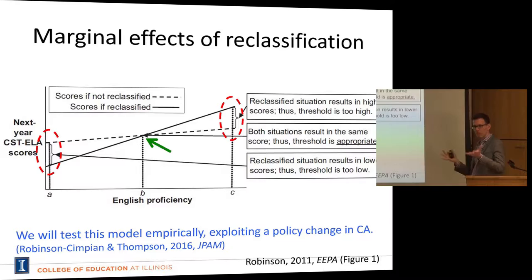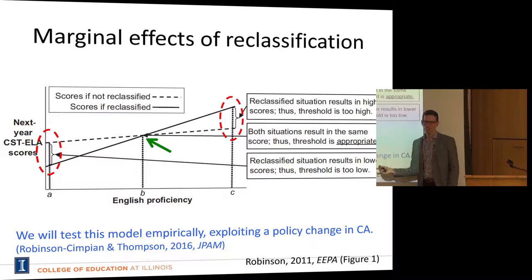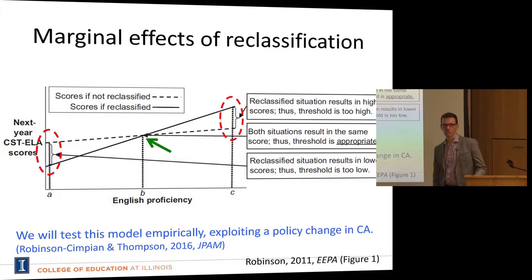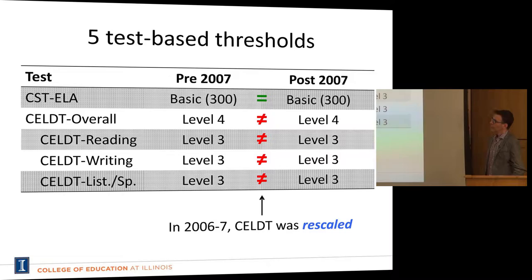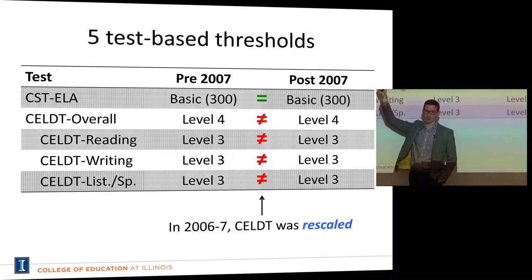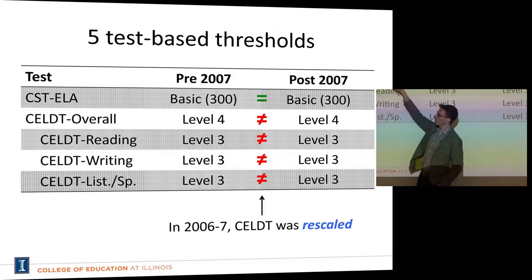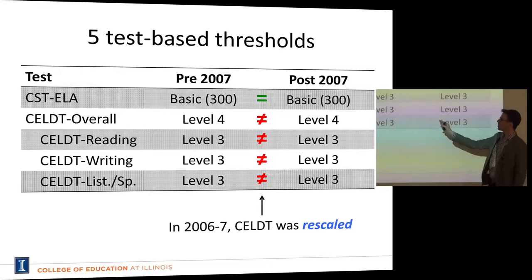Karen and I had an opportunity to test this with data from LAUSD. In the next paper, we're exploiting a policy change that shifted the criteria for English learner reclassification, allowing us to observe two different thresholds. There are five tests English learners take: the CST ELA that all students take, and the CELT with its overall score and three sub-components. There are two time periods: pre-2007 and post-2007.